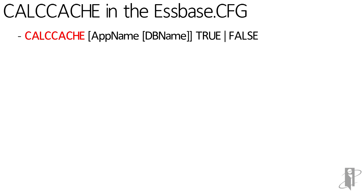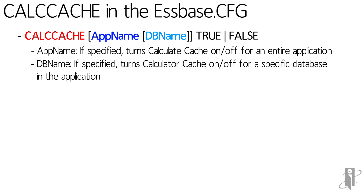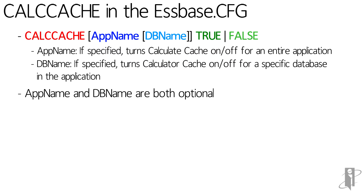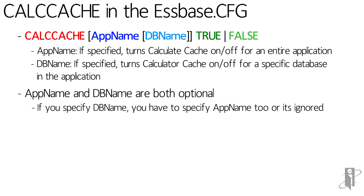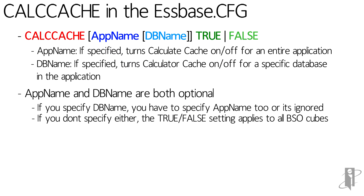The syntax is just calc cache and then a space, an application name, a database name if you specify an application name, and then either true or false. Both application name and database name are optional. If you want to specify a database name, you have to specify an application name too, or it ignores the database name. If you don't specify either of them, it's going to work on every BSO cube on the entire server.